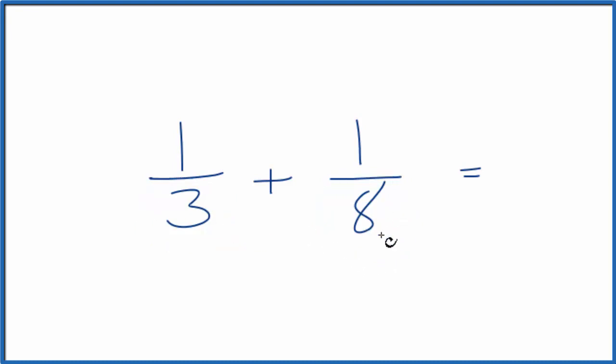We could multiply—we could take this eight and multiply the one-third by eight over eight. And then here, the three, we could multiply one-eighth by three over three.